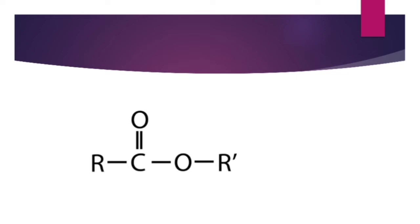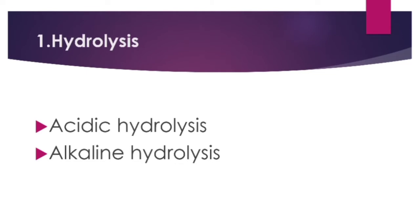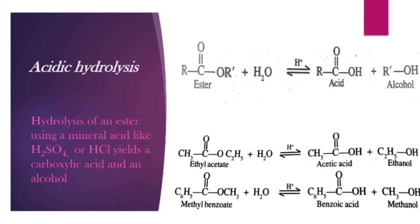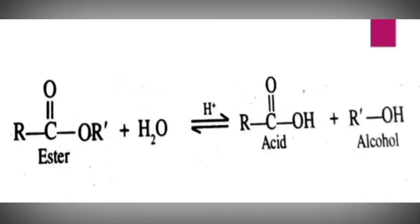The first reaction is hydrolysis. In acidic hydrolysis we get a carboxylic acid and an alcohol. Hydrolysis is the reaction with water. Hydrolysis of an ester using a mineral acid like H₂SO₄ or HCl gives a carboxylic acid and an alcohol.